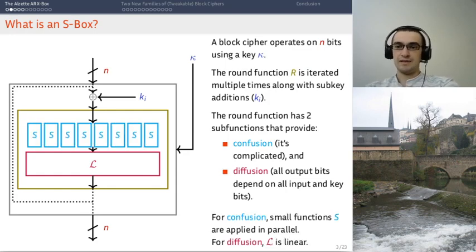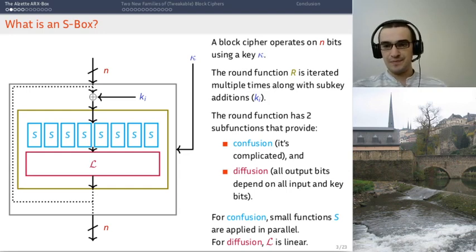A convenient way of doing that is to use what we call an s-box layer. So you're going to have small functions that operate on a small part of the state, which are applied in parallel over the full state. These will ensure the confusion. For diffusion, if we use a function which is linear, then it's less difficult to quantify the dependency between the outputs and the inputs. So these small functions s that are applied in parallel on the state, that's the s-box.